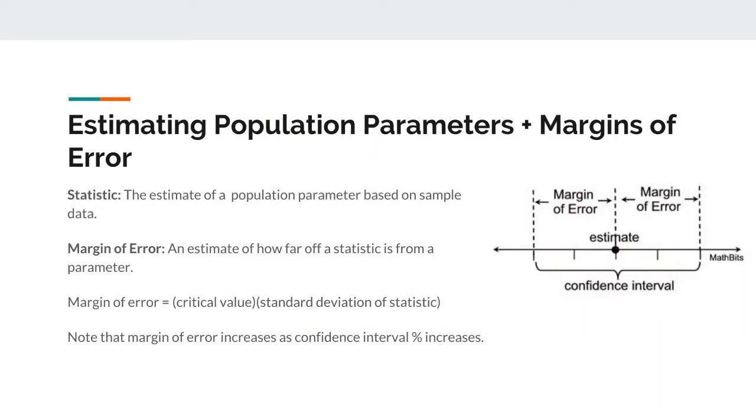To start us off, when we try to estimate population parameters, we sometimes use confidence intervals to give us a ballpark of where our parameter is. To construct a confidence interval, we use two different parts. The first part is the statistic, which is an estimate of a population parameter based on sample data. The second part is your margin of error, which is an estimate of how far off a statistic is from the parameter.